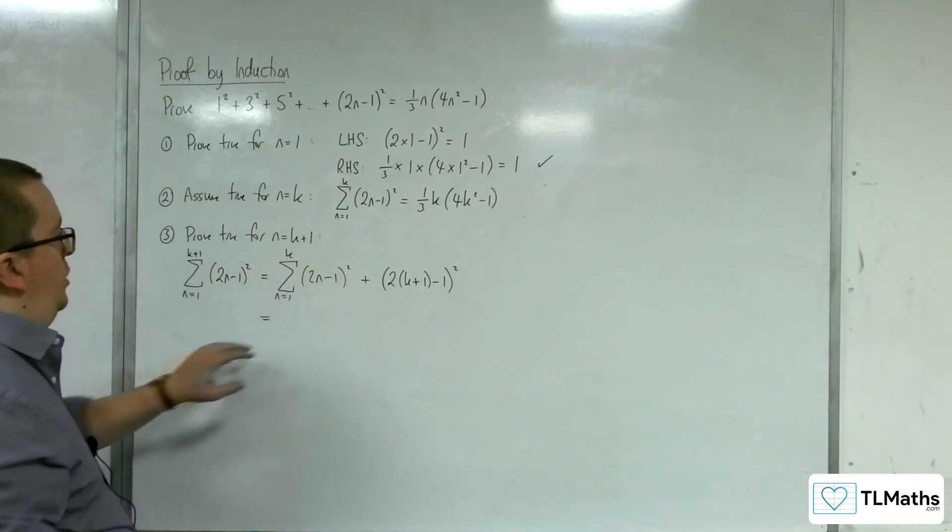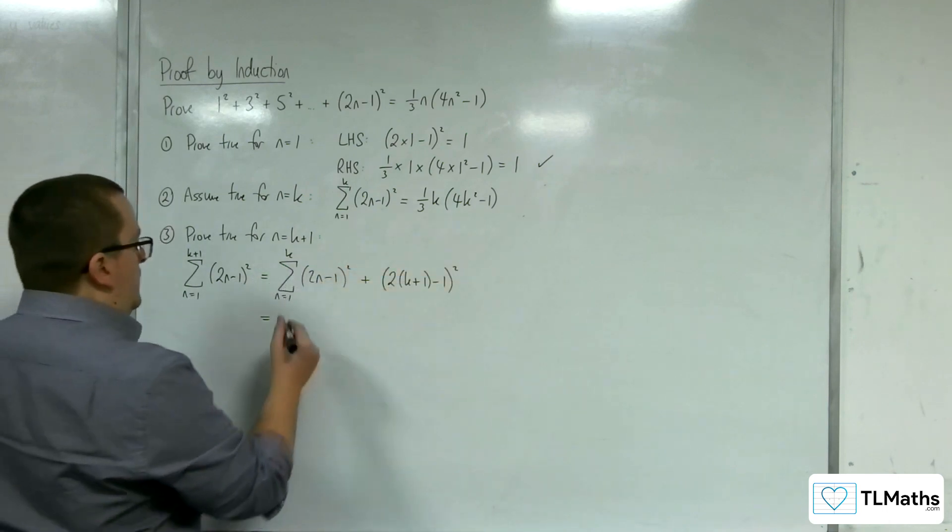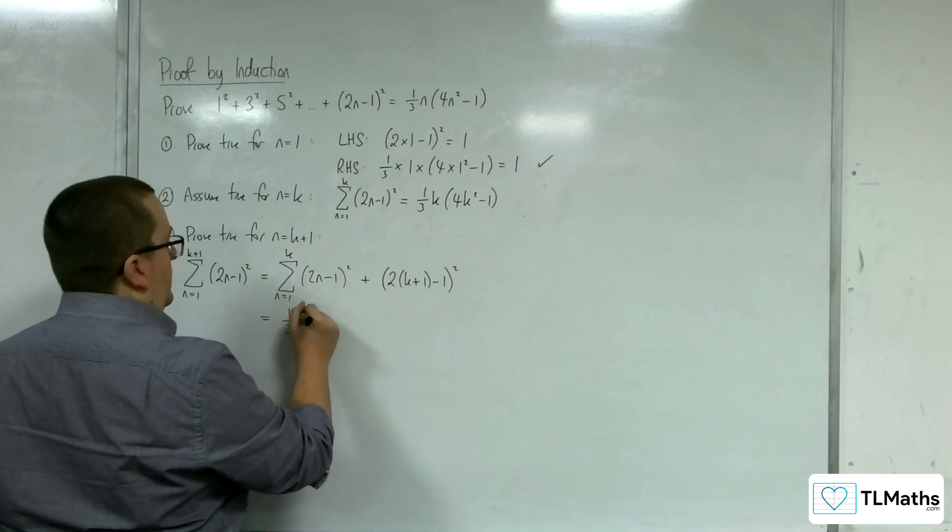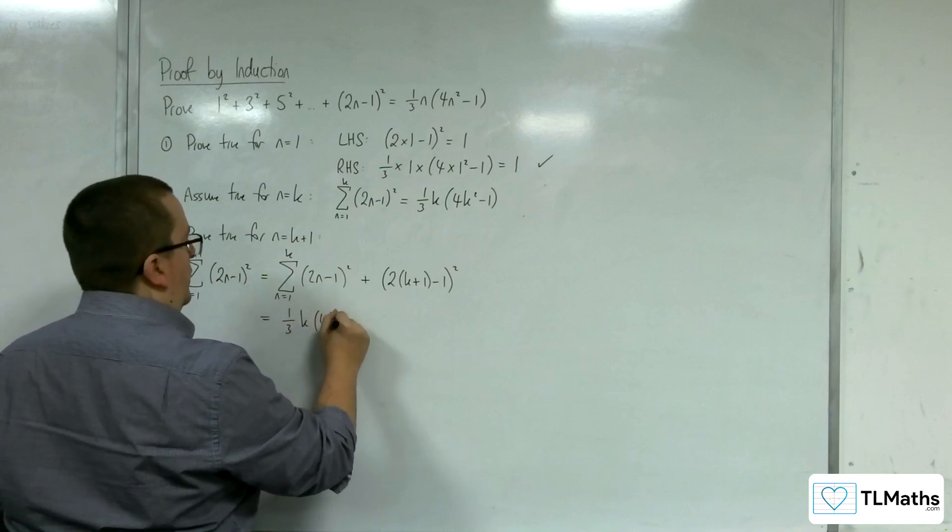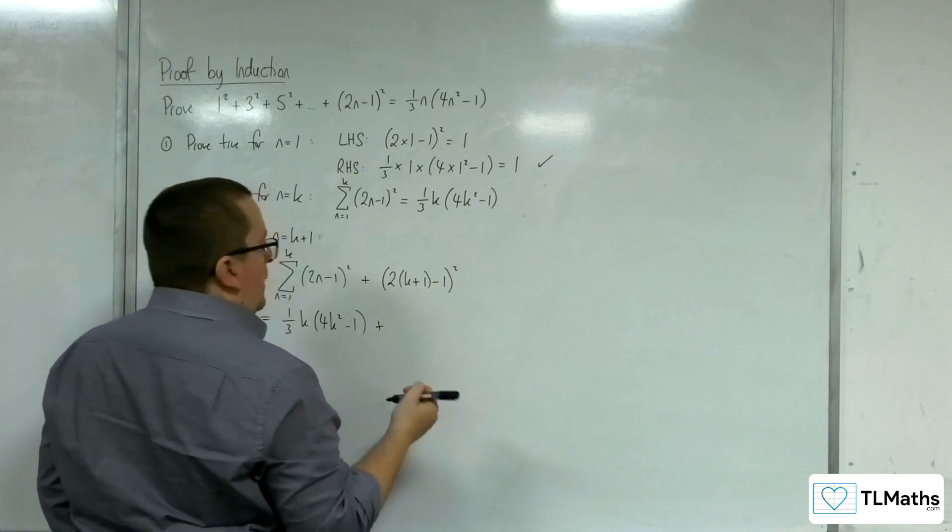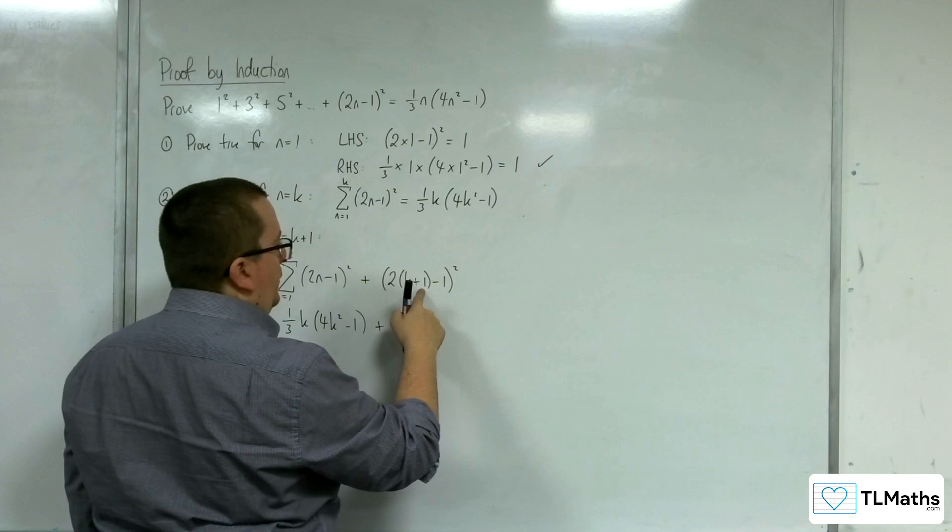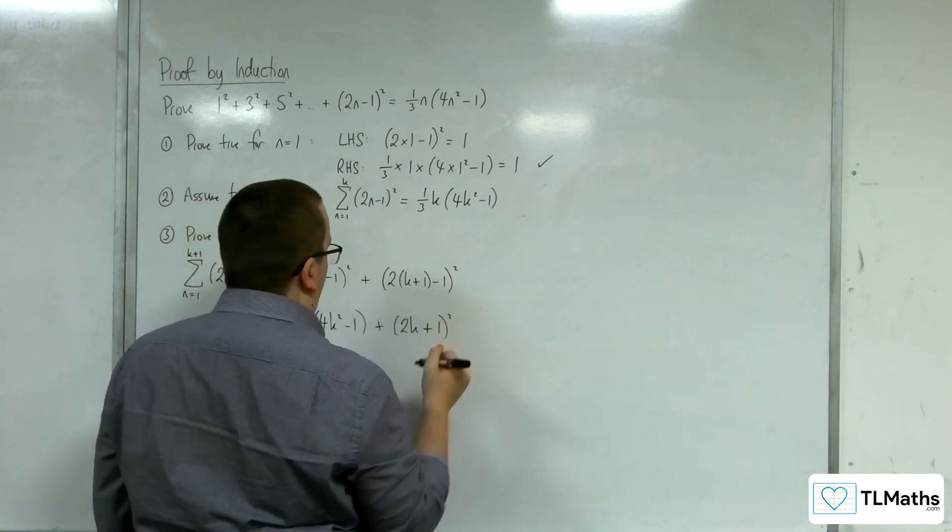Now, by our assumption, this is equal to 1 third k times 4k squared minus 1. So, 1 third k times 4k squared minus 1. And this, by simplifying that, we've got 2k plus 2, take away 1, so plus 1, squared.